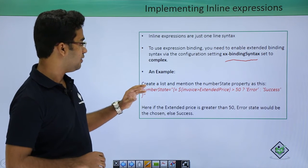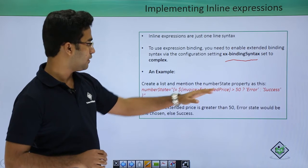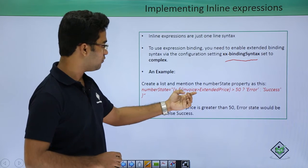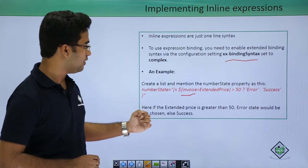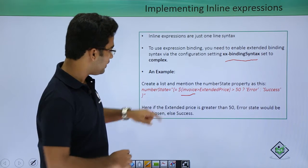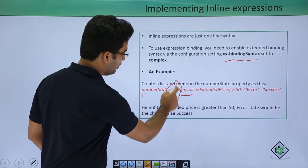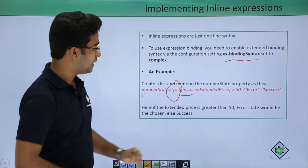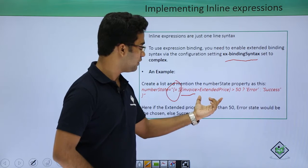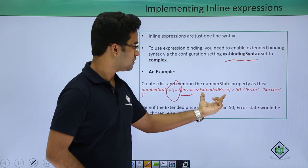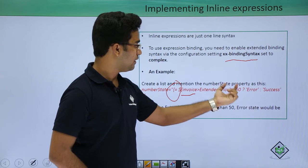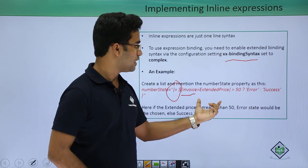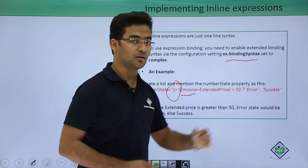I have created a list and mentioned the number state property using expression binding. The model used is invoice. This particular syntax indicates that we are using expression binding. What it does is: if the extended price value is greater than 50 it should show the error state, and if it is less than 50 it should show the success state.